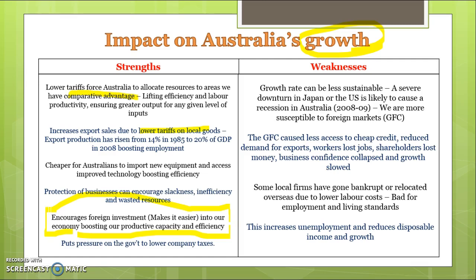It's also put pressure on the government to lower taxes, which has been good for boosting growth. In terms of weaknesses for growth, it can be less sustainable. Globalization can lead to increased instability — if there's a severe downturn in Japan or the US, some of our major trading partners, we're more susceptible to that. We often export less when other countries are growing poorly, and because many Australians invest in financial companies overseas, a poor performance abroad often leads to Australians losing money on the share market.